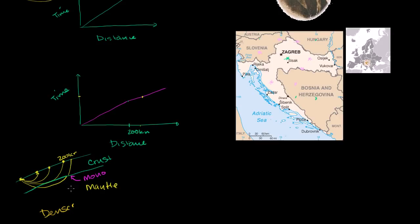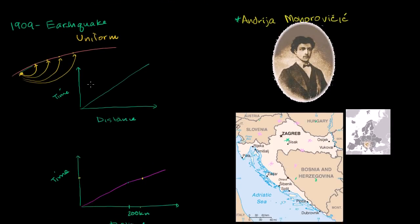He was able to tell us that there is that layer. But even more importantly, he gave us the insight that just using information from earthquakes — indirect data — we could essentially figure out the actual composition of the Earth, because no one has ever dug into the mantle, much less the outer core or the inner core. In the next videos, we'll use this insight to understand how we know there is an outer liquid core and an inner core as well.